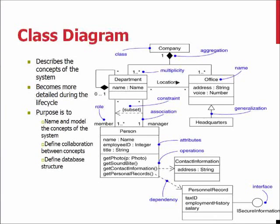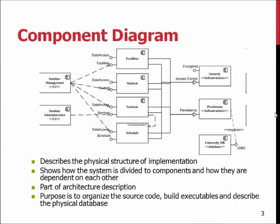The component diagram goes more into the physical nature of the system. In the component diagram we define the components or objects which are combined and integrated together to form the entire system. We have to take into account more things like the platform and the development engine, which affect the actual layout and architecture of the program.